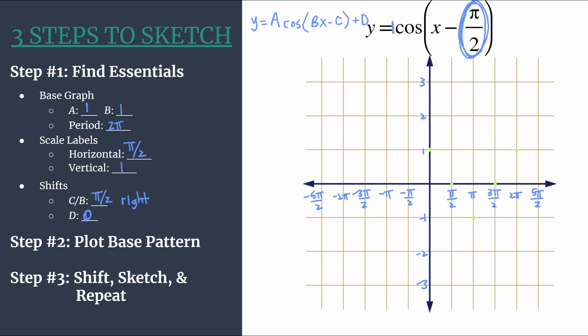So now we're ready for step three, where we can actually tackle this shift. For each of your green intermediate points from your base pattern in step two, you'll move right pi over two. If you had had a vertical shift, a d, you could do that in the same step.